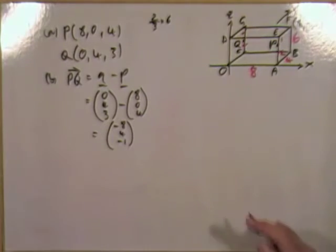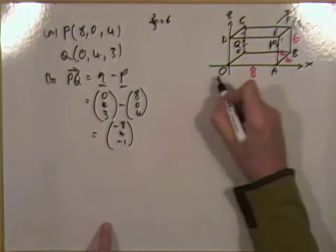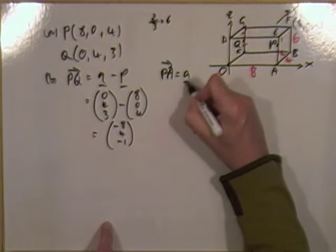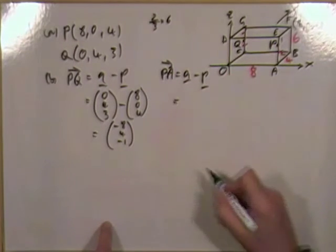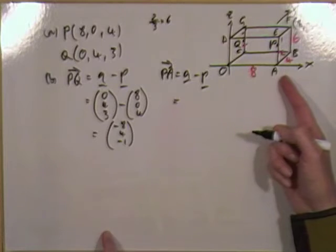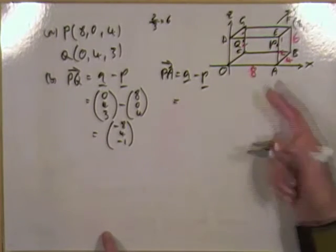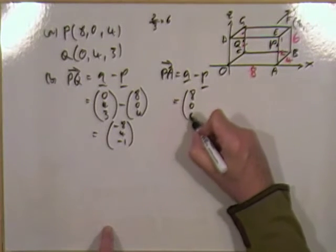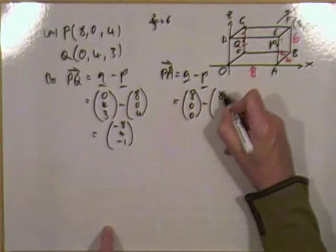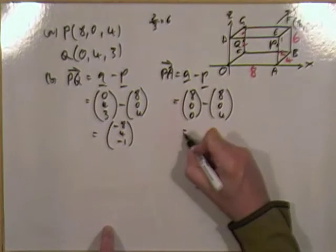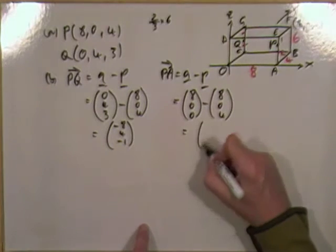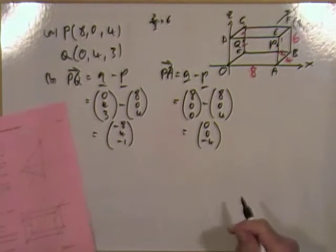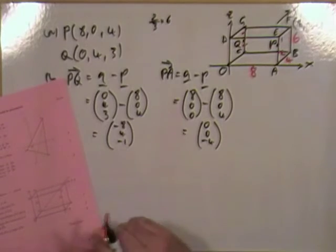Write down the components of PA. PA is going to be A minus P. A is just the point 8, 0, 0. So 8, 0, 0 take away 8, 0, 4 — that's just going to be 0, 0, negative 4. That's 2 marks again.